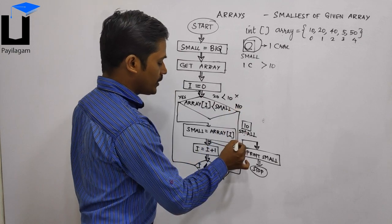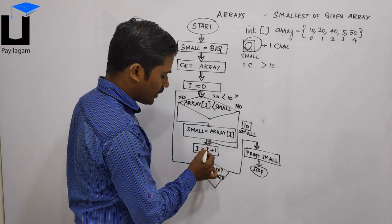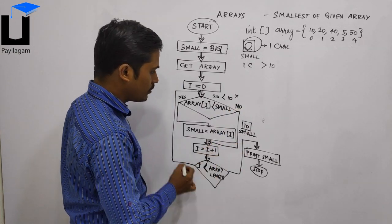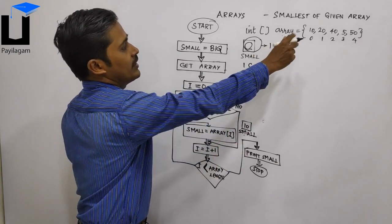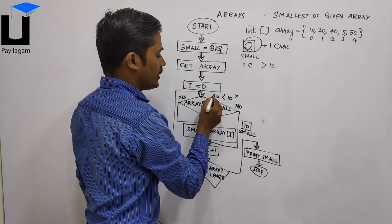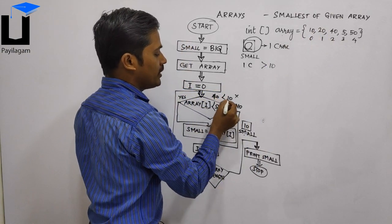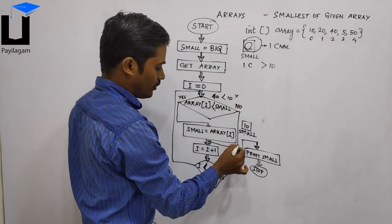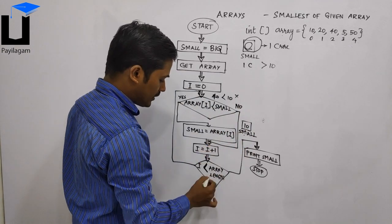No — so we go to the no part and do the increment of i. Now array[2] is 40. Is 40 less than 10? No. So again we go to the no part.